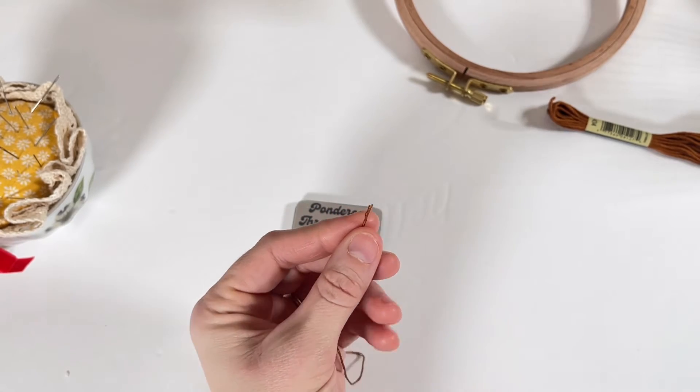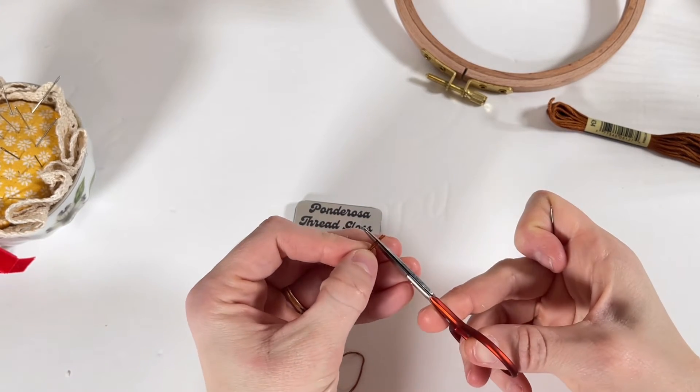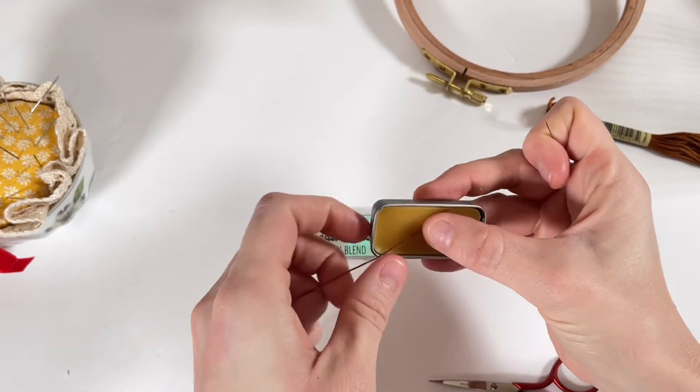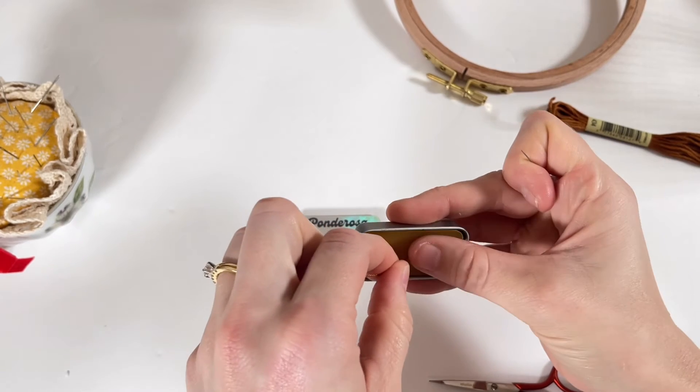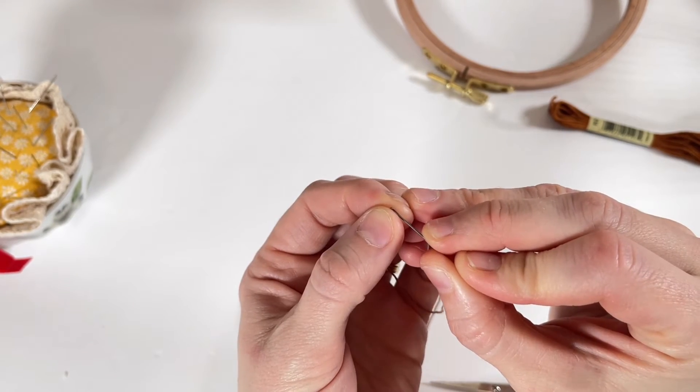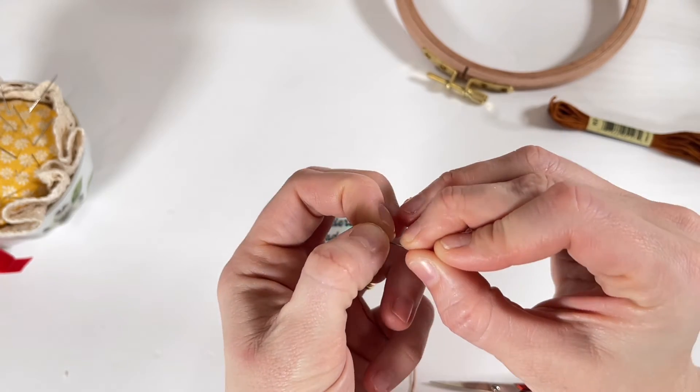If you're using multiple strands at a time it's super important again to trim the end of the floss off to make sure that they're all even, and you can do the same process either by moistening the end or using some thread gloss. Then I like to pinch the ends between my fingers to flatten out all of the strands of thread.